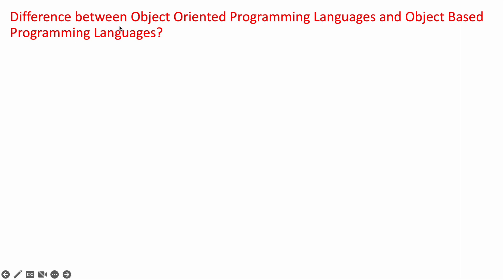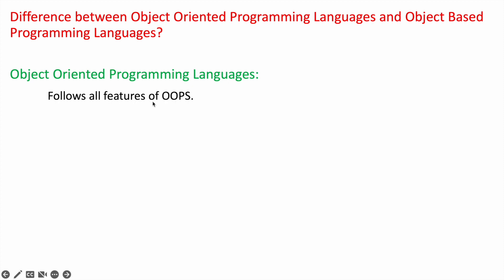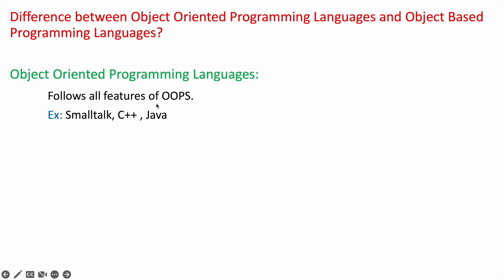What is the difference between object-oriented programming languages and object-based programming languages? Object-oriented programming languages follow all features of the object-oriented programming system. Examples of object-oriented programming languages are Smalltalk, C++, and Java.